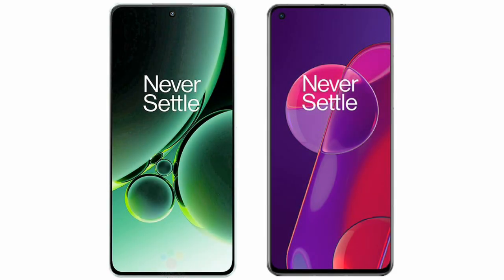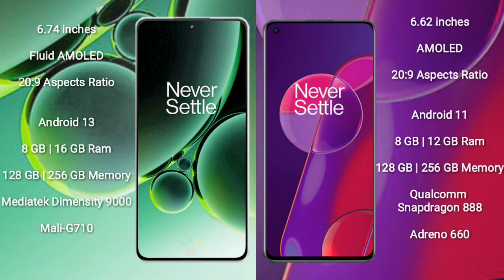I will compare the new OnePlus Nord 3 with OnePlus 9RT. OnePlus Nord 3 comes with a 6.74-inch flat AMOLED display with an aspect ratio of 20:9. OnePlus 9RT comes with a 6.62-inch AMOLED display and it's also aspect ratio 20:9.